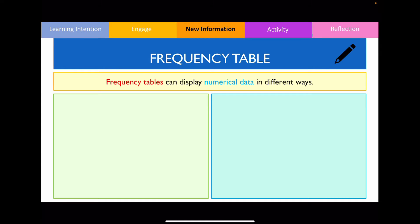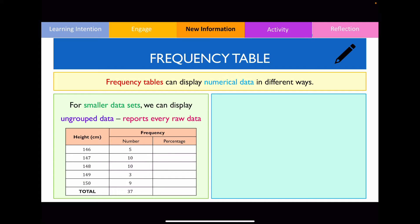Frequency tables can be used to display both categorical and numerical data. However, depending on the numerical data provided, we could display the frequency table in two main ways. When dealing with smaller data sets, we can display ungrouped data in the frequency table — this means we just list down every raw data value. An example of an ungrouped frequency table is shown below, where we literally list down every single value collected.